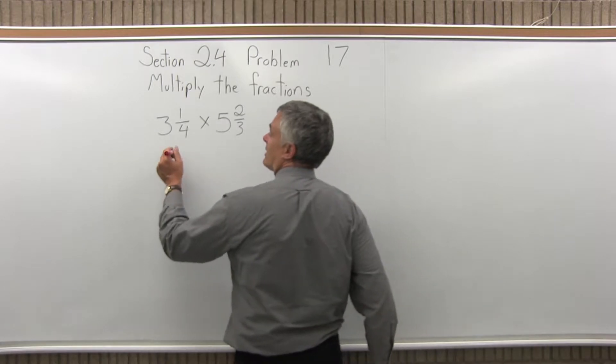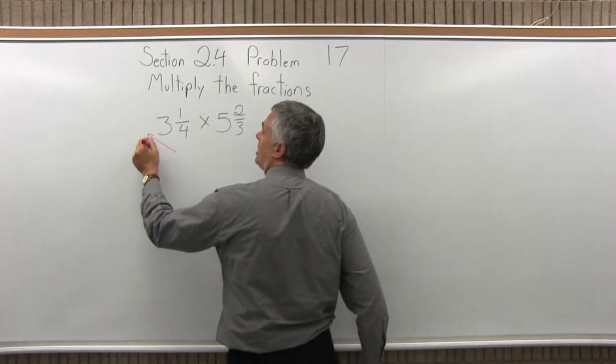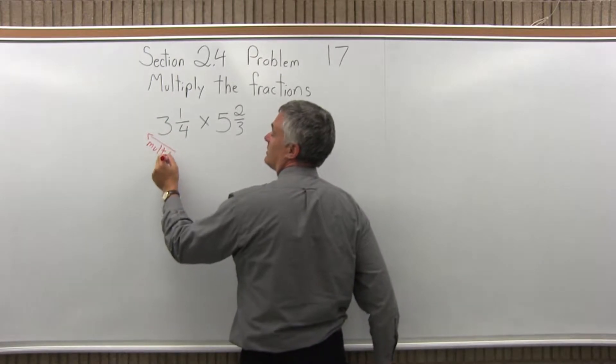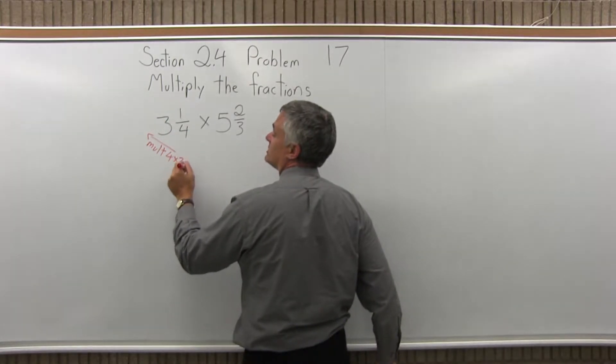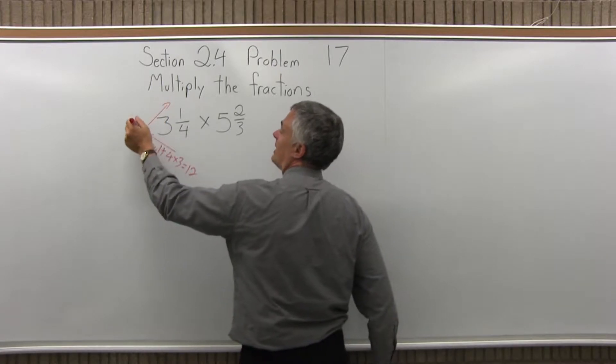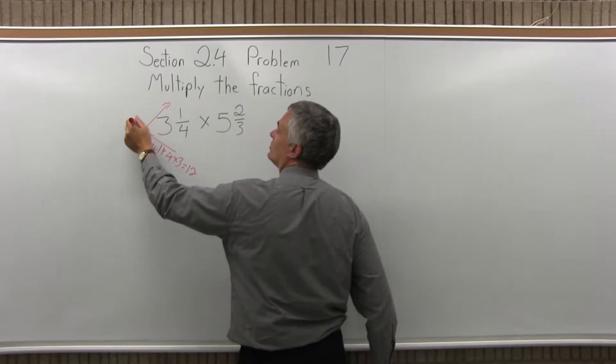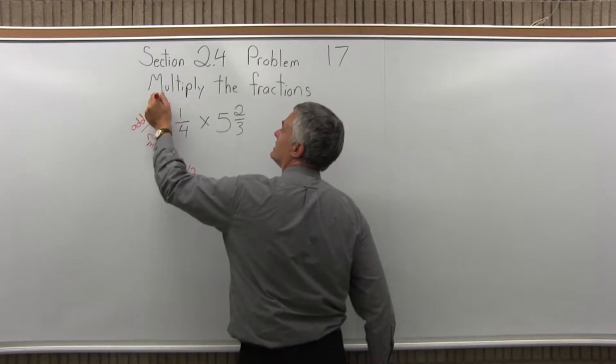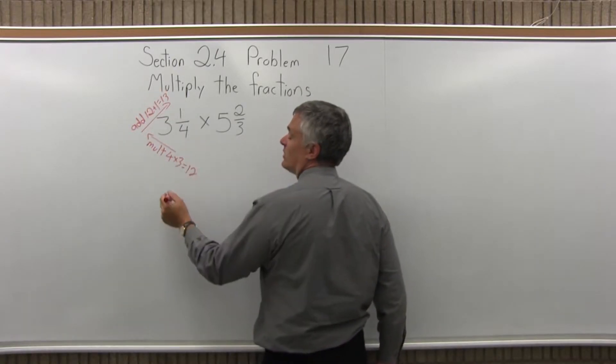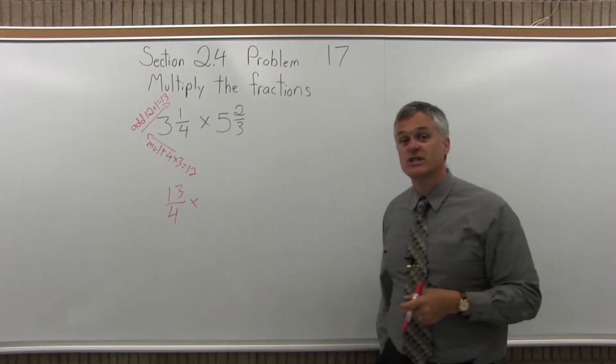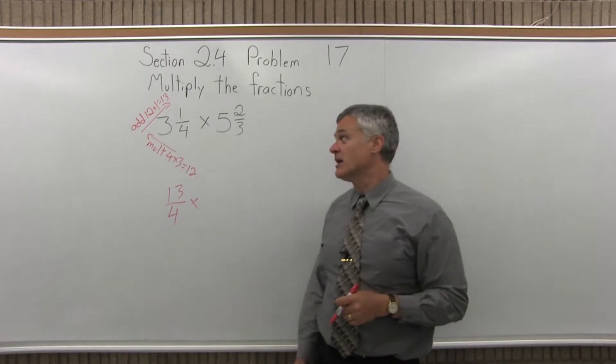To accomplish that, I'm going to multiply the denominator times the whole number in front. So that multiplication will be 4 times 3, which is 12. Then I take that result of 12 and add it to the numerator. So 12 plus 1 more is 13. So 3 and 1 fourth is equivalent to 13 fourths. The first fraction now has only a numerator and a denominator.